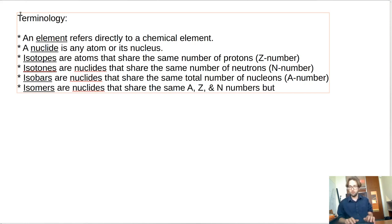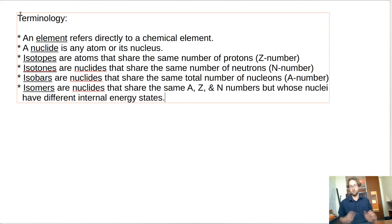And then finally, and perhaps most tricky, is the word isomer. So an isomer, isomers are nuclides that share the same A and Z and N numbers, but whose nuclei have different internal energy states.